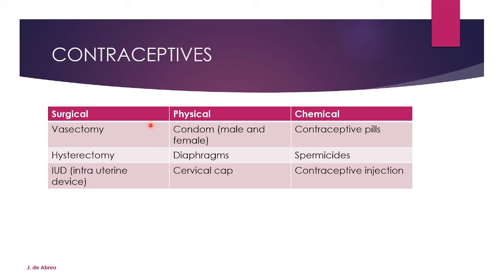Contraceptives come in three types. Surgical methods: a vasectomy is when the vas deferens is cut or tied; a hysterectomy is when the fallopian tubes are cut or tied. An IUD is an intrauterine device — a T-shaped device that funnels the fertilized ovum out of the uterus, preventing it from embedding in the uterine tissue. Physical methods include male and female condoms, diaphragms, and cervical caps. Chemical methods include contraceptive pills, contraceptive injections, and spermicides. That is the complete human reproduction chapter.